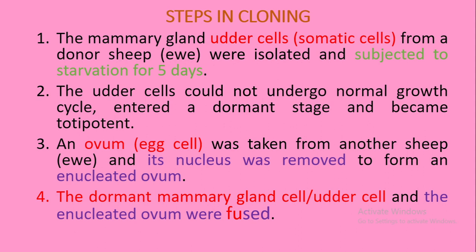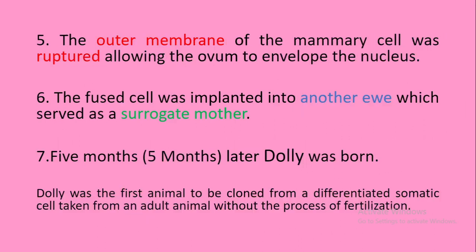The outer membrane of the mammary cell was ruptured, allowing its nucleus to pass into the enucleated ovum. The fused cell was then implanted into another ewe which served as a surrogate mother. Five months later, Dolly was born. Dolly was the first animal to be cloned from a differentiated somatic cell taken from an adult animal, without the process of fertilization.